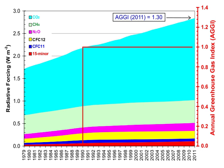The average residence time of a water molecule in the atmosphere is only about 9 days, compared to years or centuries for other greenhouse gases such as CH4 and CO2. Thus, water vapor responds to and amplifies effects of the other greenhouse gases. The Clausius–Clapeyron relation establishes that more water vapor will be present per unit volume at elevated temperatures. This and other basic principles indicate that warming associated with increased concentrations of the other greenhouse gases also will increase the concentration of water vapor, assuming that the relative humidity remains approximately constant. Because water vapor is a greenhouse gas, this results in further warming as a positive feedback that amplifies the original warming.